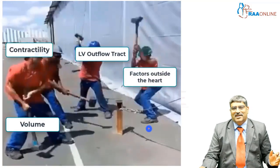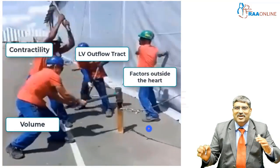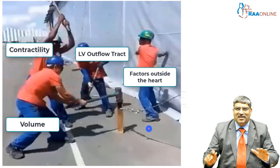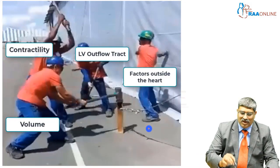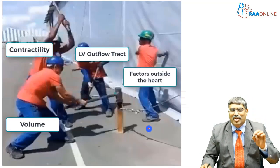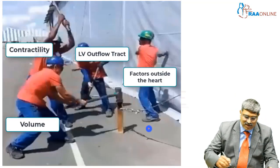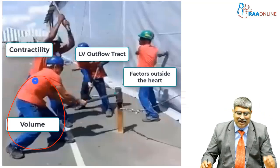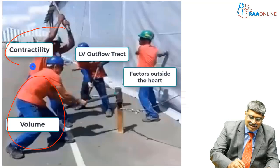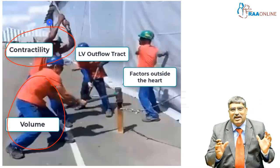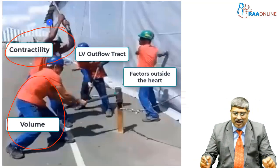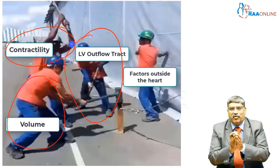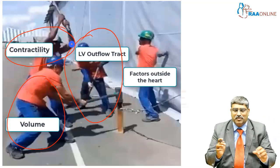Now look at these four people — they are moving in good synchronization. Even if one of them goes out of that synchrony, this won't happen. Your hemodynamics is very similar to it. There is a volume which comes from the body into the right atrium, and the heart as a pump has to contract to get this blood out. There is also a certain factor in the left ventricular outflow tract which gives resistance to ejection of this blood.